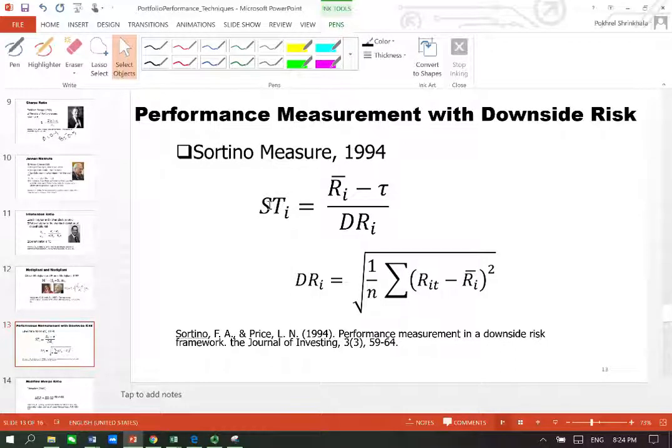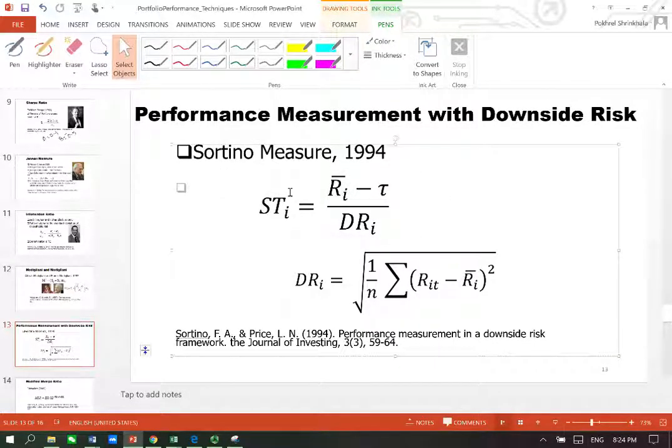The formula was developed by Sortino and Price in 1994. The Sortino ratio for the portfolio can be calculated by finding the excess return, excess from some threshold theta, and that is divided by the downside risk, which is also known as semi-deviation.